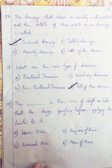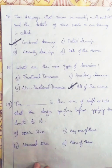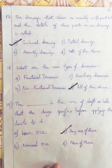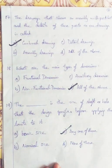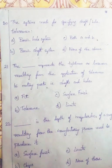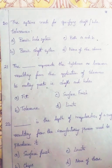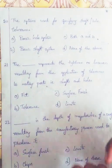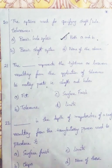Question 19: The size of a shaft or hole that the designer specifies before applying the limits to it is the Basic and Nominal Size, so we go with Option C, any one of these. Question 20: The systems used for specifying shaft-hole tolerance are the Basic Hole System and Basic Shaft System. Since both are relevant, we go with Option B, both A and B.